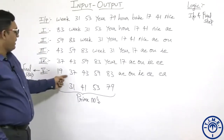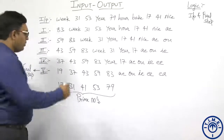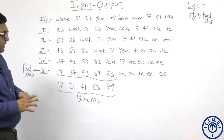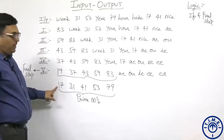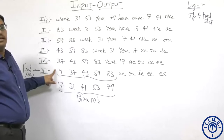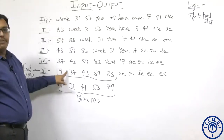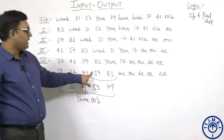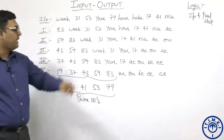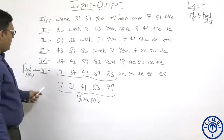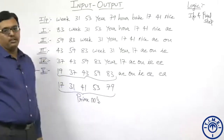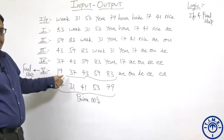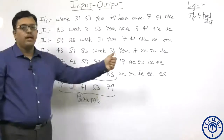The output numbers are also prime numbers. After 17, the next prime number is 19. After 31, the next prime number is 37. After 41, the next prime number is 43. After 53, the next prime number is 59. And after 79, the next prime number is 83. So he has taken the numbers given in the input, found the next prime number, and put them in ascending order.